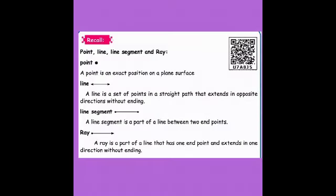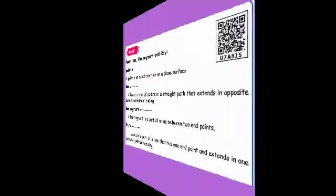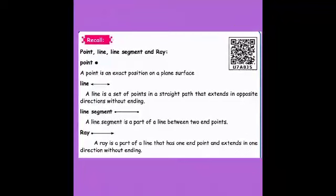The first concept is a point. A point is an exact position on a plane surface. If you are putting a dot on this plane surface, that is called a point.